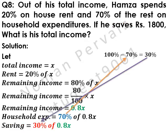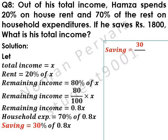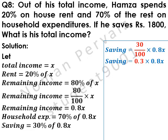Saving is equal to 30% of remaining income, which is 0.8x. Note that 100% minus 70% of household expenditures becomes 30%. Saving is equal to 30% — the percent sign is removed by dividing the whole term by 100. In maths, 'of' is converted to a multiplication sign, and 0.8x is written as it is. If we divide 30 by 100, it becomes 0.3, and all remaining values come without any change.